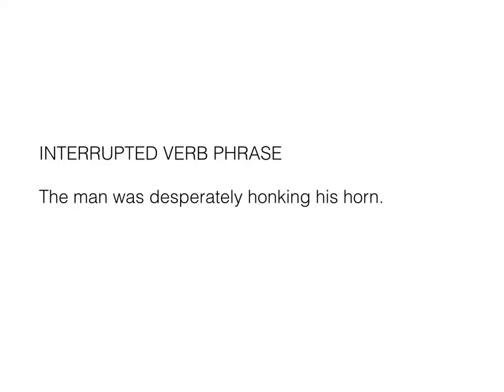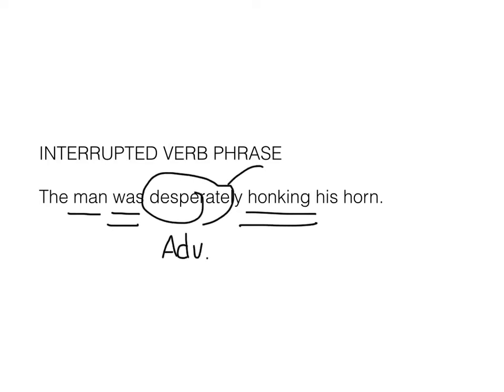Next, we can also have an interrupted verb phrase. This is just like the example we used before about not and never. The adverb can be in the middle of the verb phrase. For example, man is the subject, was honking is the verb phrase, and desperately is in the middle — it's an adverb describing was honking. But we need to take that out of the verb phrase because adverbs are not considered part of the verb phrase when diagramming or identifying verb phrases.